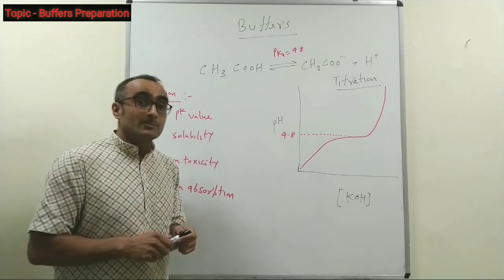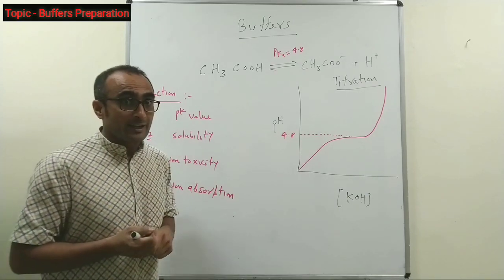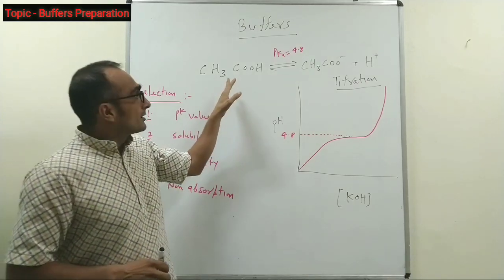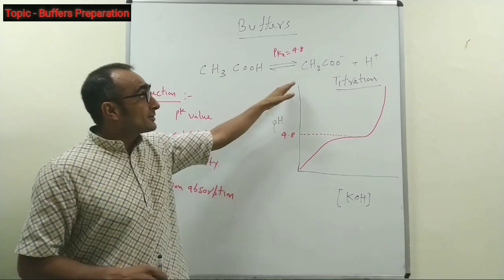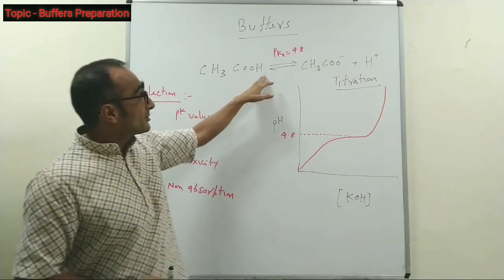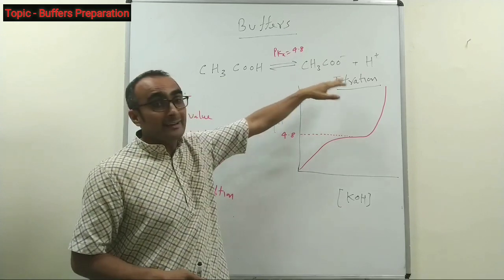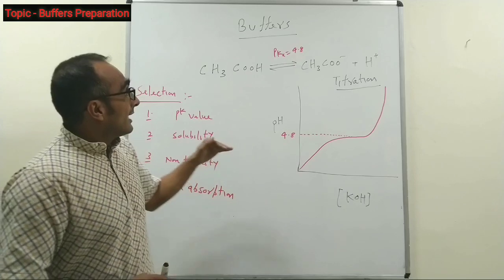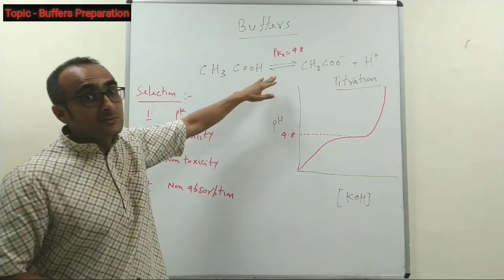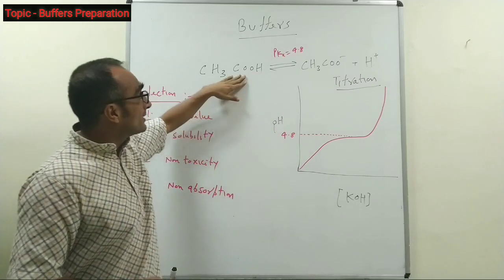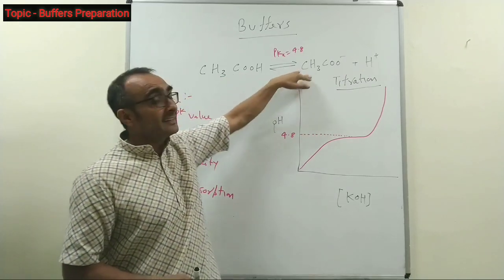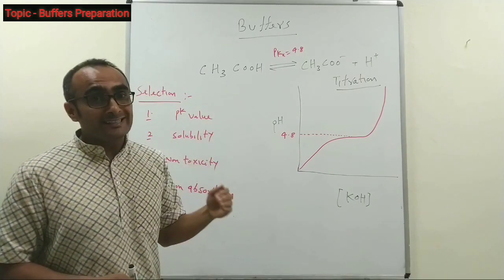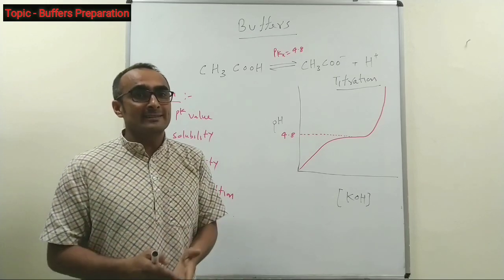How do these buffers function? Let's talk with an example: acetic acid. If you have acetic acid in solution, it will tend to dissociate — the proton will dissociate from acetic acid to form acetate ion and H⁺ ions. This equilibrium is maintained in solution. If you keep this equation at pH 4.8, the ratio of protonated acetic acid to acetate ion is equal to 1. This pH value of 4.8 is called the pKa value of acetic acid — it is the dissociation constant.